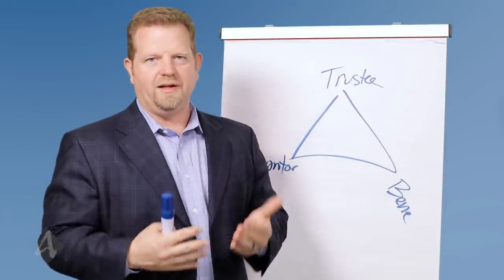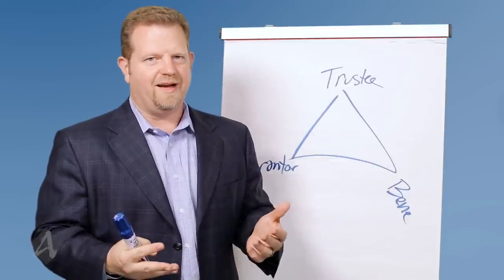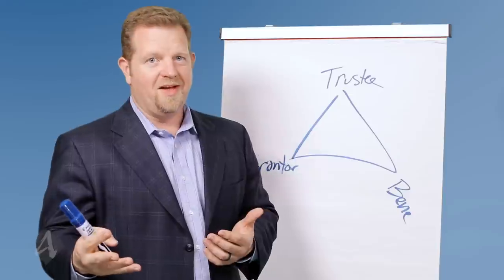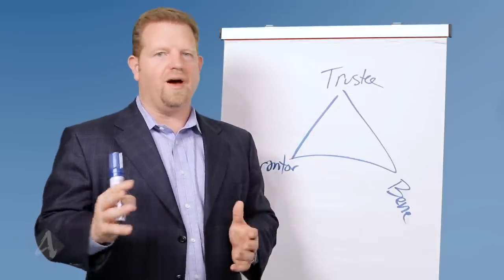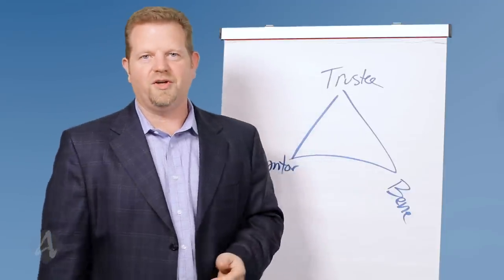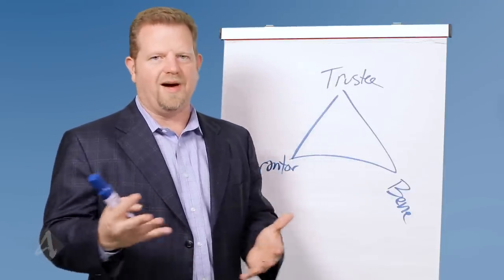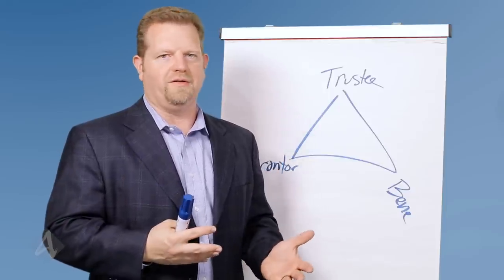And so usually the title of the trust, like a dynasty trust, all that tells me is that it's a trust that's designed to last a long time. And some people go like, oh, I heard about this dynasty trust. It's just a trust. There's always gonna be grantors, trustees and beneficiaries. And then we're gonna just have some relative idea about what are the qualities of that trust.